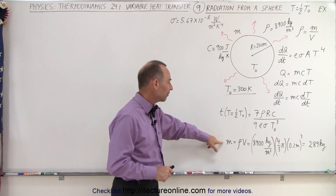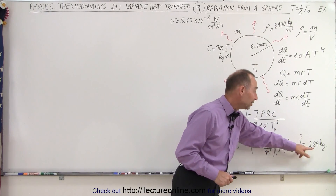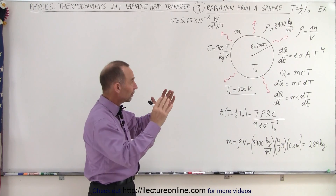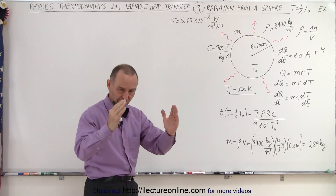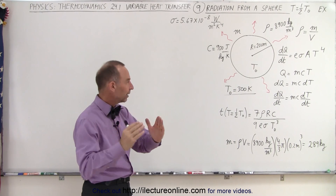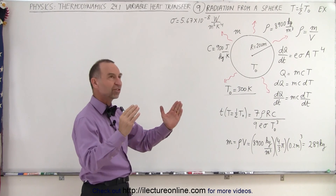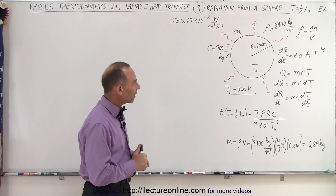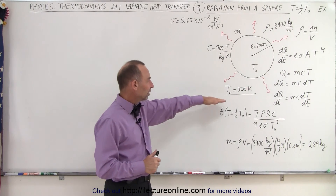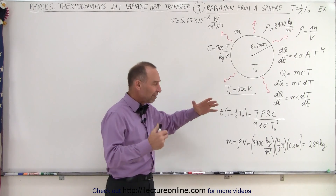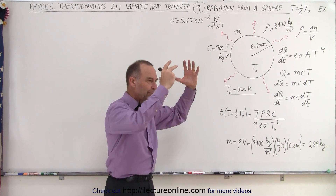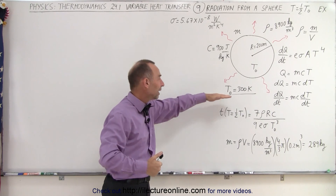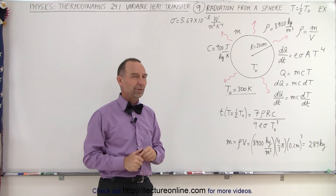I've already calculated the mass of this object, which turns out to be 289 kilograms for a solid metal sphere of radius 20 centimeters — a diameter of about 40 centimeters across, or about 16 inches. Starting with an initial temperature of about room temperature, if you were to place that sphere in space, how long would it take for that sphere to radiate heat and drop to half of its original temperature?